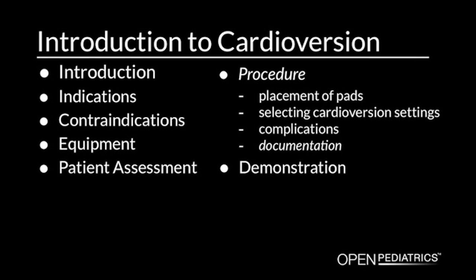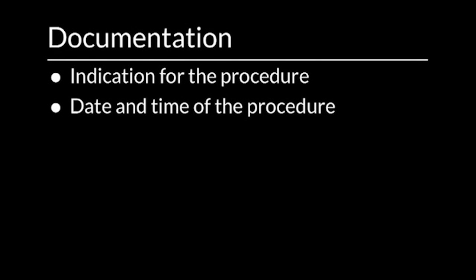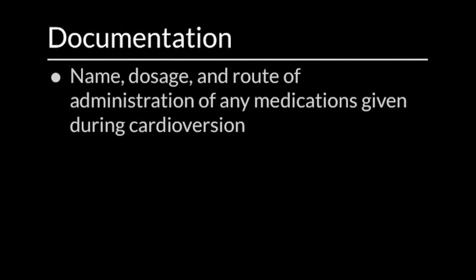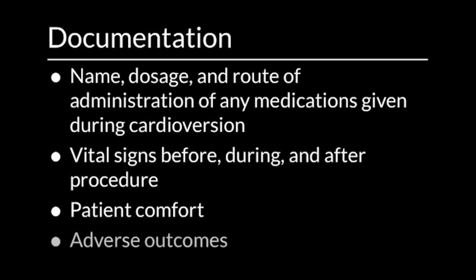Following cardioversion, you should document the following information in the patient's medical record: the indication for the procedure; the date and time of the procedure; the number of synchronous shocks and the voltage required to restore normal cardiac rhythm; the name, dosage, and route of administration of any medications given during cardioversion; the vital signs before, during, and after the procedure; patient comfort with the procedure; and any adverse outcomes.